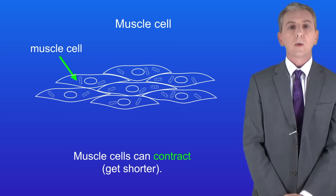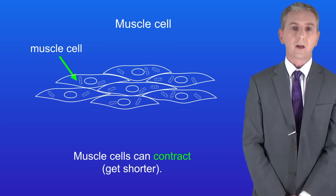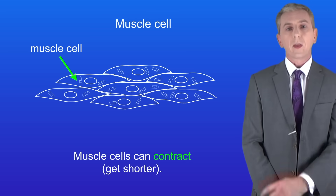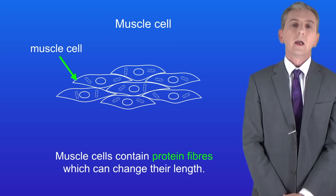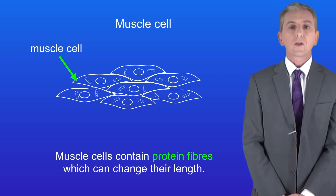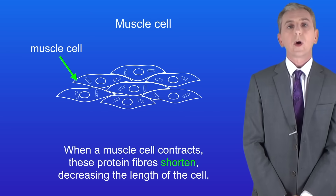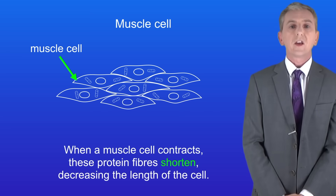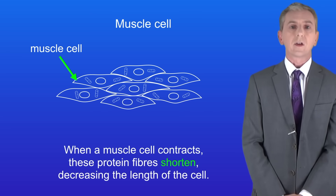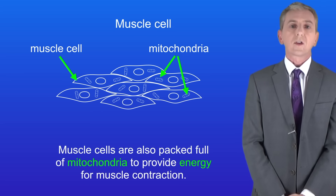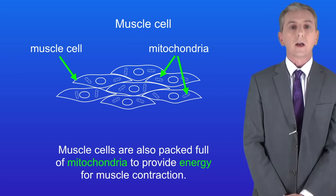The last cell we're going to look at are muscle cells. The key feature of muscle cells is that they can contract — in other words get shorter. To do this, muscle cells contain protein fibers which can change their length. When a muscle cell contracts, these protein fibers shorten, decreasing the length of the cell. Muscle cells are also packed full of mitochondria to provide energy for muscle contraction.